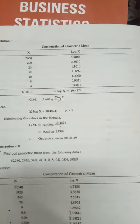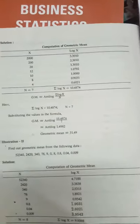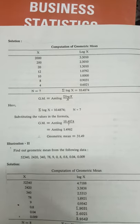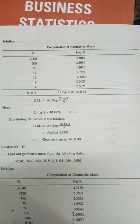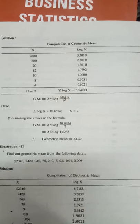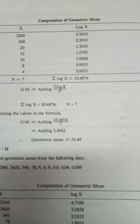After that, my students, we should add. And the formula is like antilog of sigma log x by n. 10.4874 divided by 7. So you are getting 1.4982.